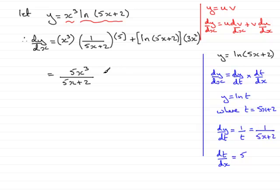And then plus and I put these square brackets around the natural log because I didn't want this to look like the natural log of 5x plus 2 times the 3x squared. The 3x squared can go at the front so that becomes 3x squared without the brackets now just times the natural log of 5x plus 2.